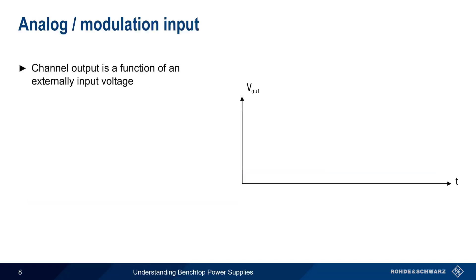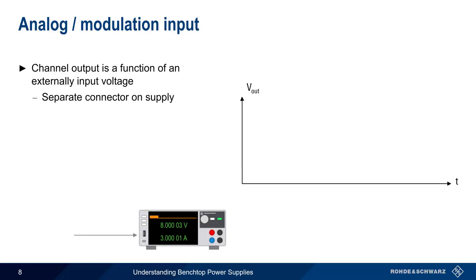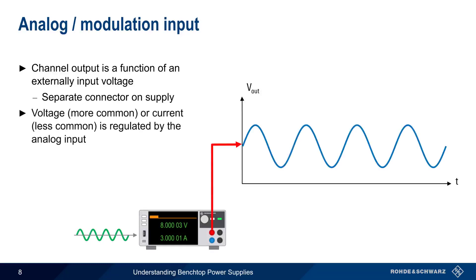On some supplies, it's also possible to control the channel output using an external input voltage. This analog, or modulation input, is fed into the supply using a separate connector. The output voltage, or sometimes the output current limit, is controlled or regulated by this analog input. As shown here, this can be used to create modulated output voltage waveforms, such as the sine wave shown here.